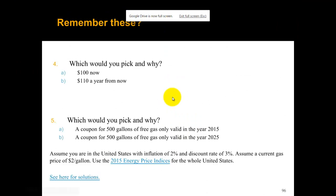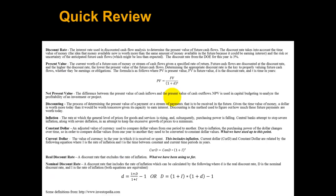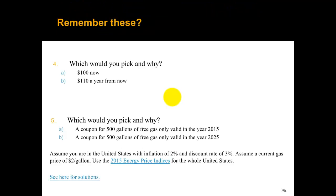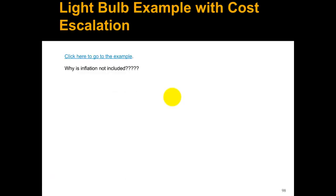The last thing I'll show you is this review sheet. I recommend keeping it as a quick reference and printing out just that one slide from the presentation. As usual, I'll leave you with the light bulb example with cost escalation included. We did not include inflation in this example because all electricity purchases are in constant dollars, so all we need to take into account is the cost escalation — not the inflation — and we just need to make sure we discount with the real discount rate. It's nice that we don't need to worry about inflation for these specific types of energy efficiency upgrades. Thanks for watching.